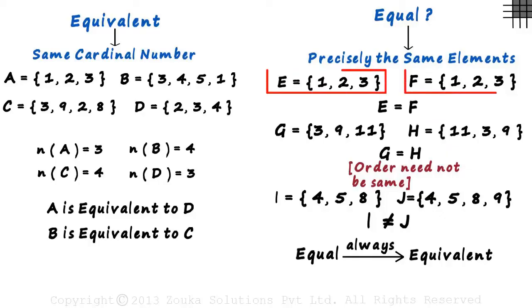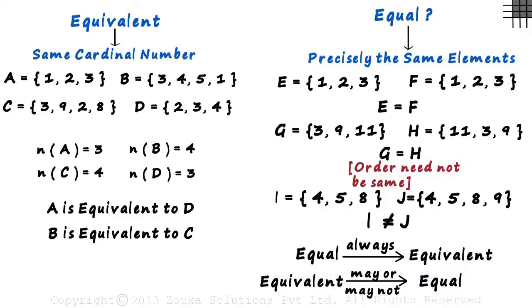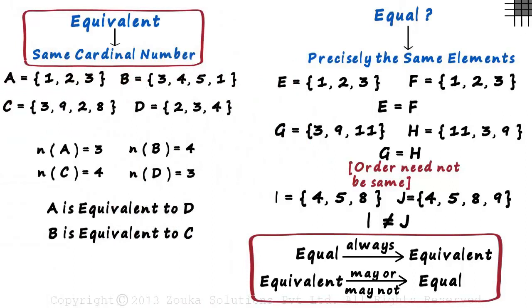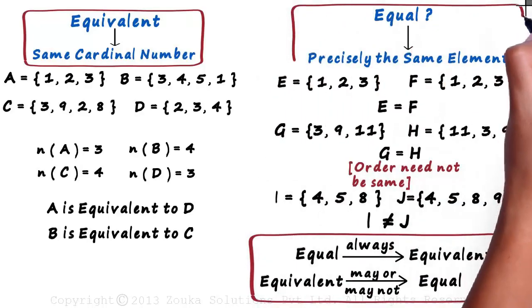But now look at sets E and F. They are equivalent, but they are also equal. This tells us that two sets that are equivalent may or may not be equal. Remember, two sets are equivalent if they have the same cardinal number. And two sets are equal if they have the same cardinal number and the same elements.